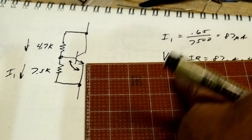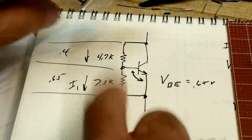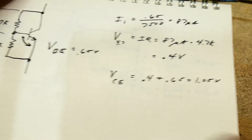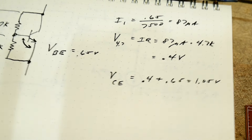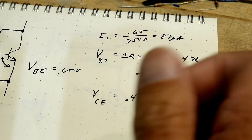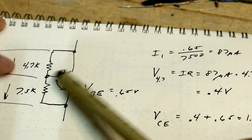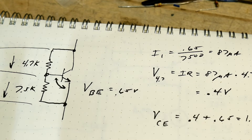So we have 0.65 volts from base to emitter, and 0.4 volts across the lower resistor. The total voltage from collector to emitter is 0.65 + 0.4 = 1.05 volts. So this circuit generates about 1 volt collector-to-emitter. Why would you want that? It doesn't make any sense yet — let's see how it's used.